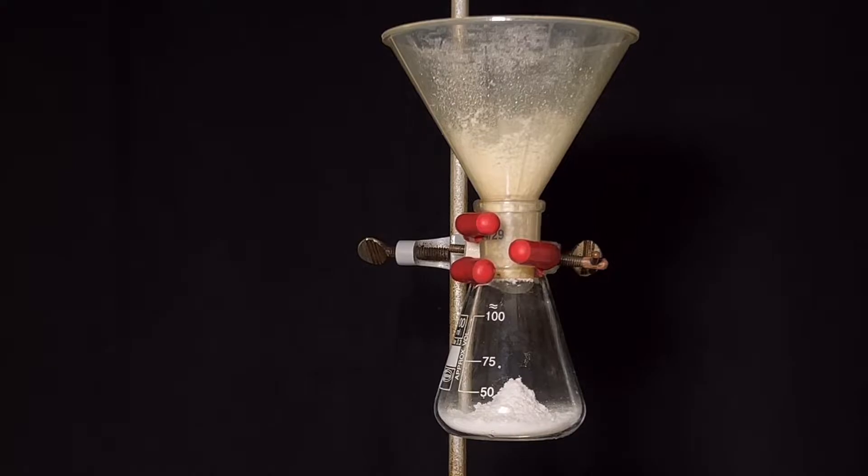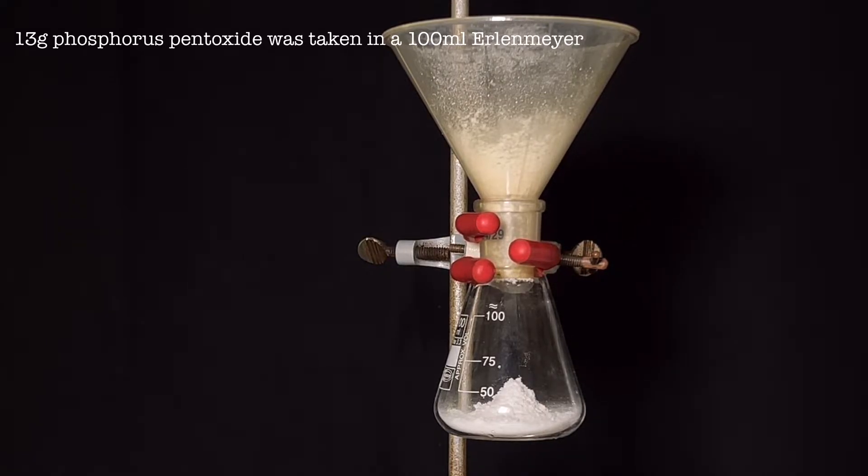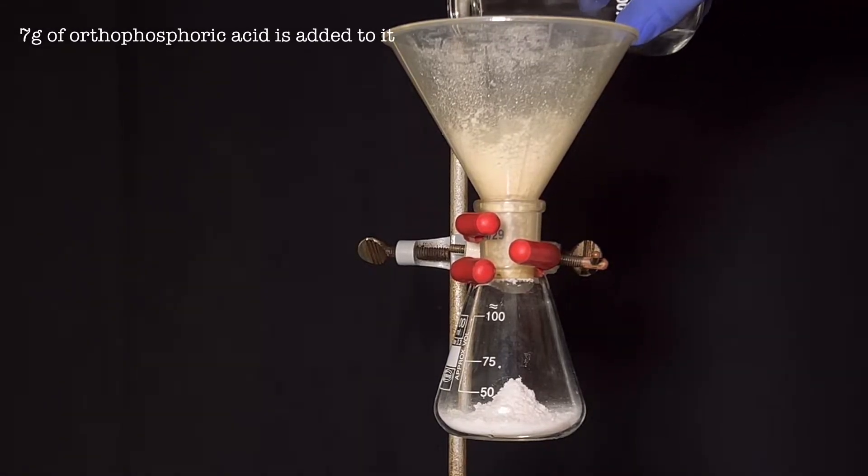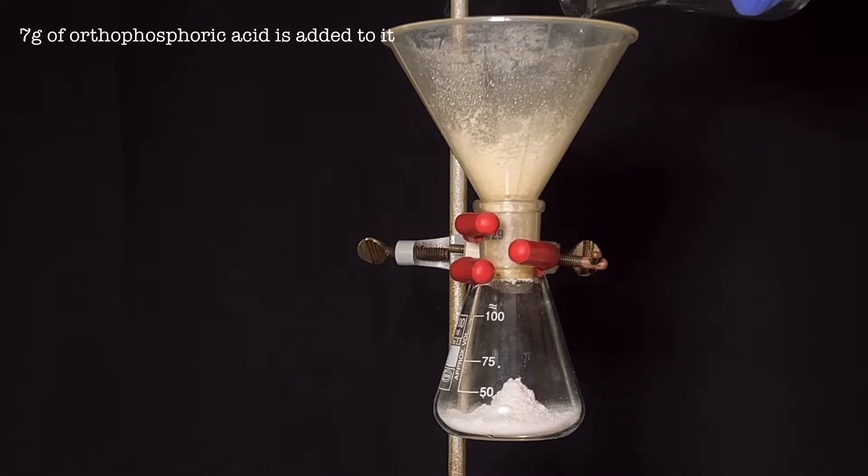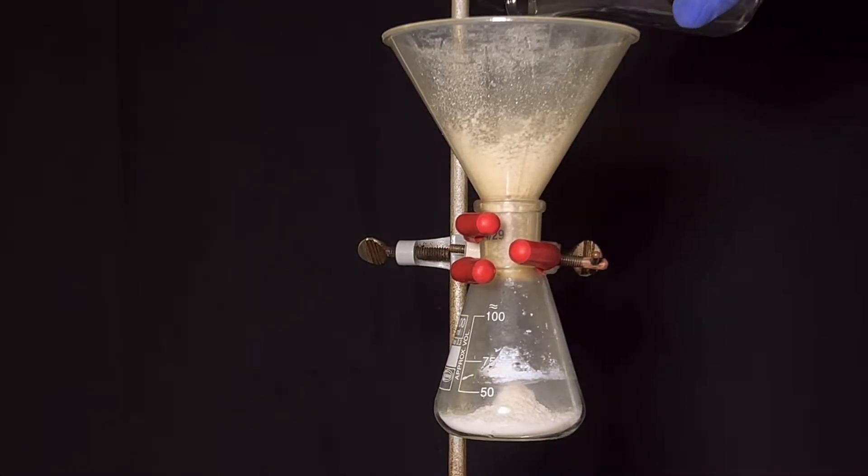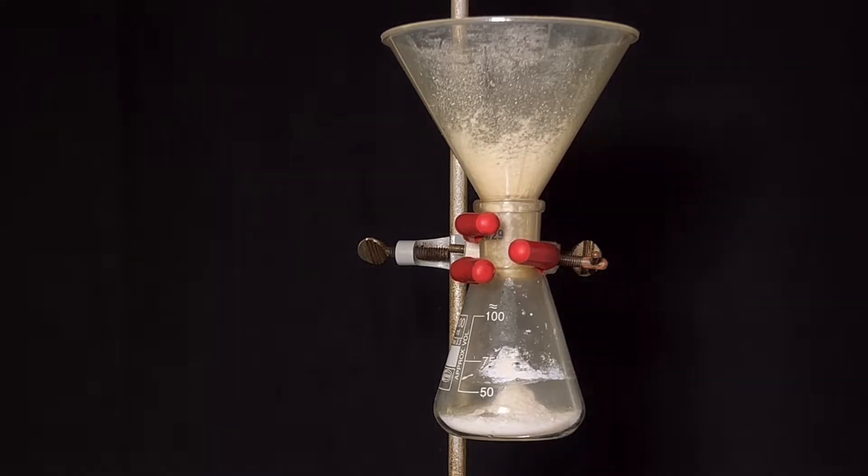Once that is under vacuum, we will move with the preparation of the polyphosphoric acid. For that, 13 grams of phosphorus pentoxide was quickly transferred to a 100 milliliter Erlenmeyer flask using a funnel. Then 7 grams of orthophosphoric acid is added to it. The phosphoric acid was added in a circular manner to wash down everything to the flask.